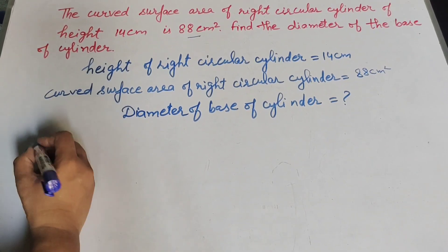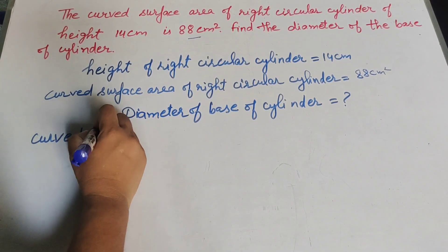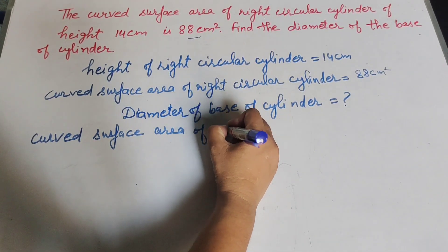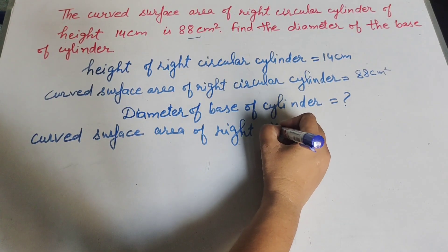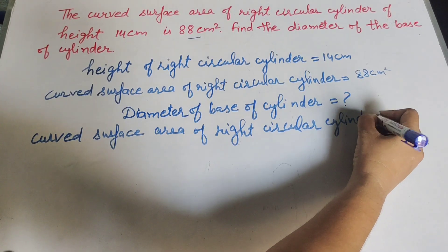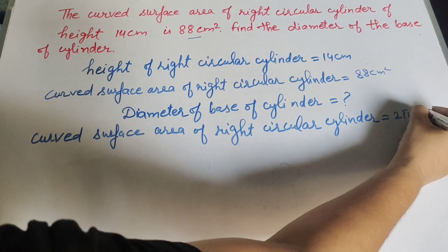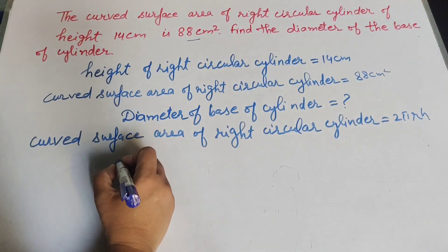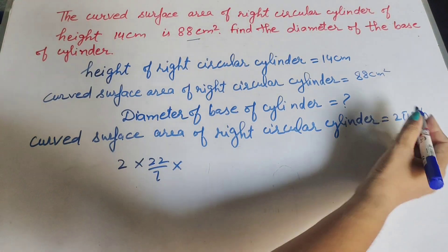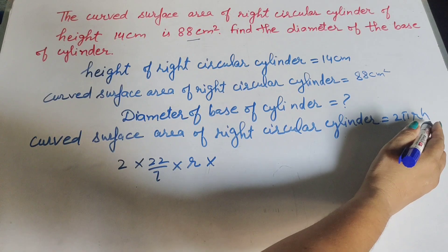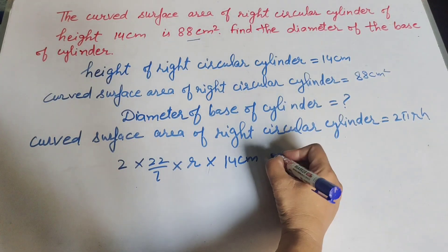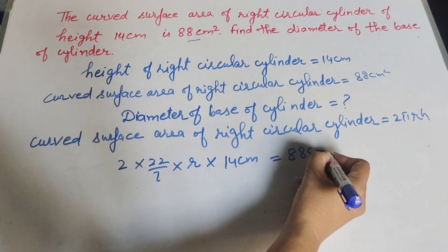We know the formula to find the curved surface area of a right circular cylinder: curved surface area equals 2πrh, where pi is 22 over 7, r is the radius of the base that we need to find, and height h is given as 14 cm. The curved surface area is given as 88 cm square.